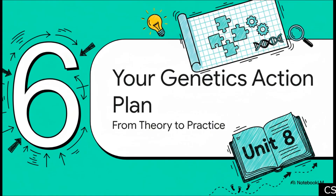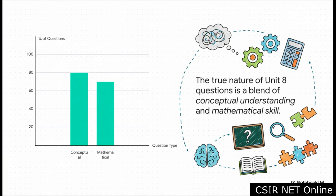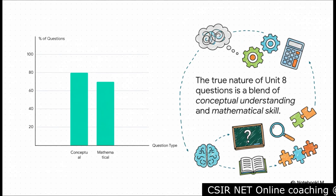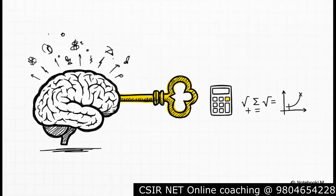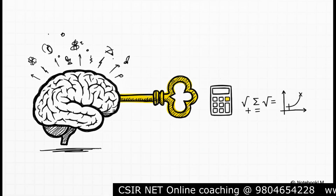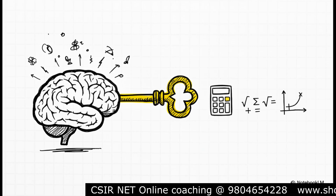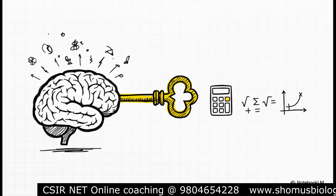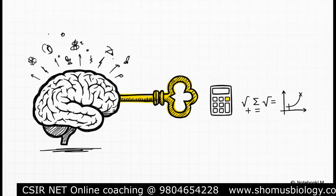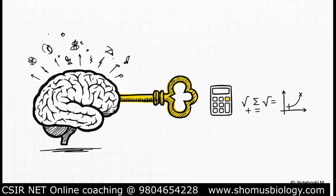So we've talked about the what — now let's talk about the how. This chart tells you everything you need to know about what this unit is really like. About 80% of questions are conceptual, and a massive 70% involves some kind of math or problem solving. So what does that tell you? You absolutely cannot solve the math if you don't deeply, truly understand the theory behind it. Your approach has to be theory first. Before you even think about picking up a calculator or trying a linkage problem, you have to master the why. Why do these genes segregate like this? Why does this cross give me that ratio? A strong conceptual base is the absolute prerequisite for success here.